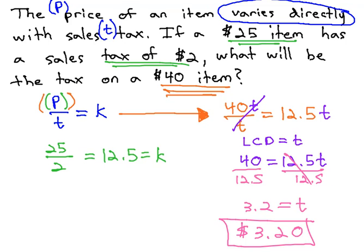In order to solve this variation problem, we first identify the type of variation to get our equation, then use our given information to find the constant, then we use that constant to answer the question.